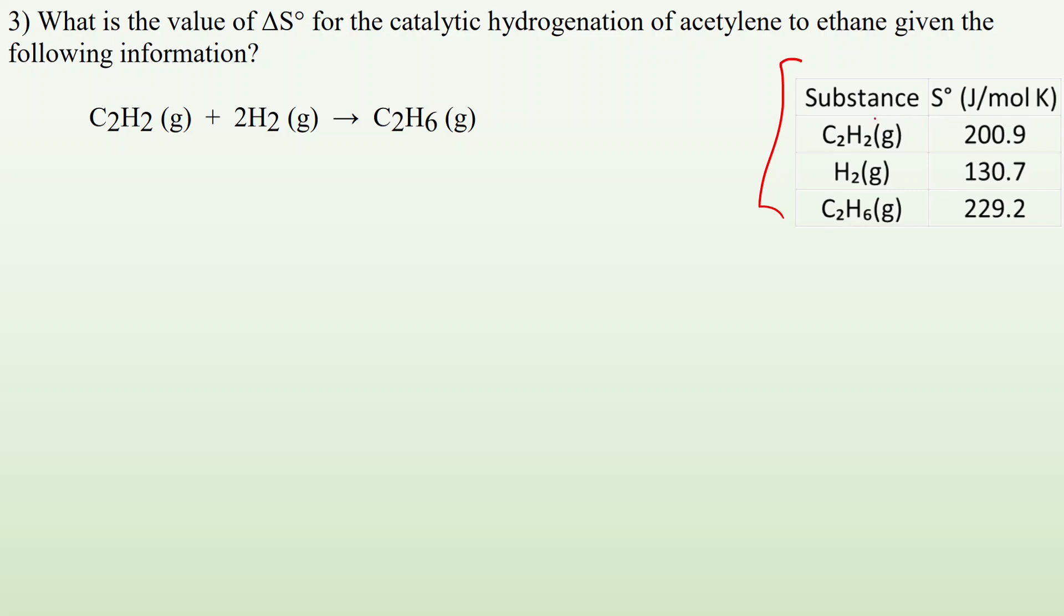So with this, you go, all right, well, let me look at my reactants and my products. C2H2 gas has an entropy of 200.9. I'm not going to write the units because I'm lazy, but it's joules per mole Kelvin, right? The unit's right there. And then there's two H2s. So I look, what is the H2 gas? Well, it's 130.7.